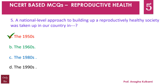The national level approach towards building a reproductively healthy society started with family planning programs launched in 1951. Over the last six decades, many other programs have been started: in 2000, the national population policy was launched; in 2005, the National Rural Health Mission (NRHM) was launched to revamp public health services in rural areas. Janani Suraksha Yojana with conditional cash transfer and Reproductive Child Health Care (RCH) programs were also initiated.